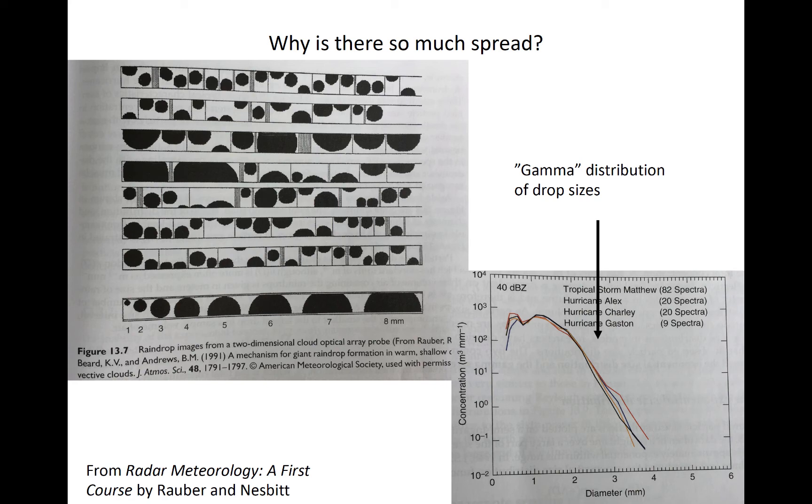However, some distributions actually contain more water than others and would therefore likely result in the larger rain rate at the surface.